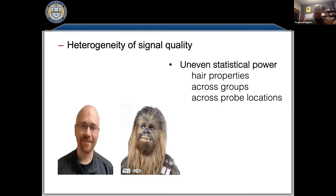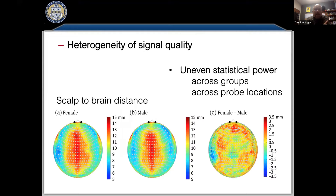We have to think about how systematic biases affect our fNIRS measurements, particularly when comparing different groups with different characteristics. Another factor driving heterogeneity is the underlying structure of the head. We published a paper — with Ashley Whiteman as lead author — that took about 100 MRIs from kids aged roughly six to eleven. We segmented them and looked at skull thickness, brain depth, and variability in folding patterns.